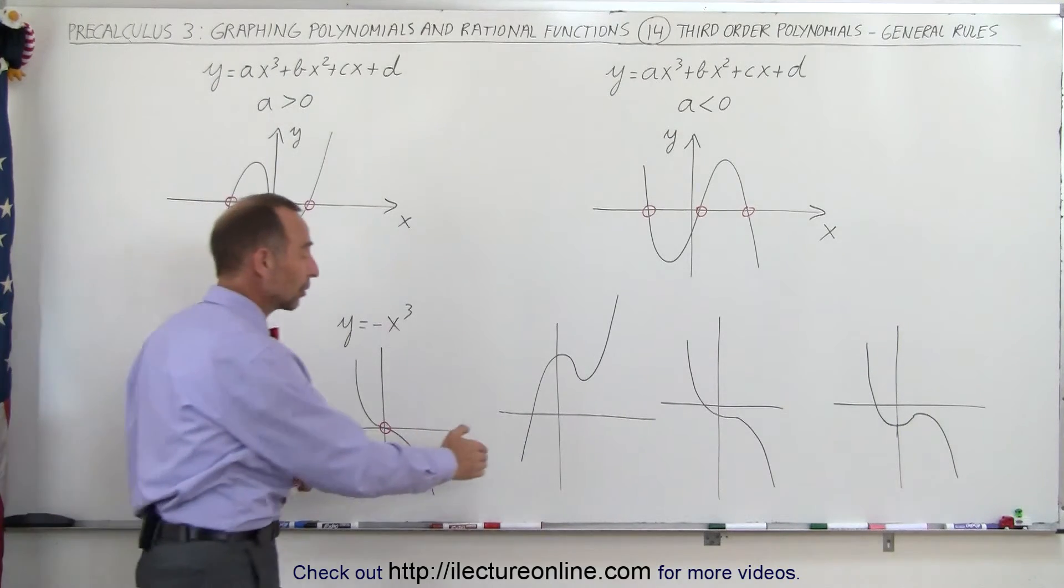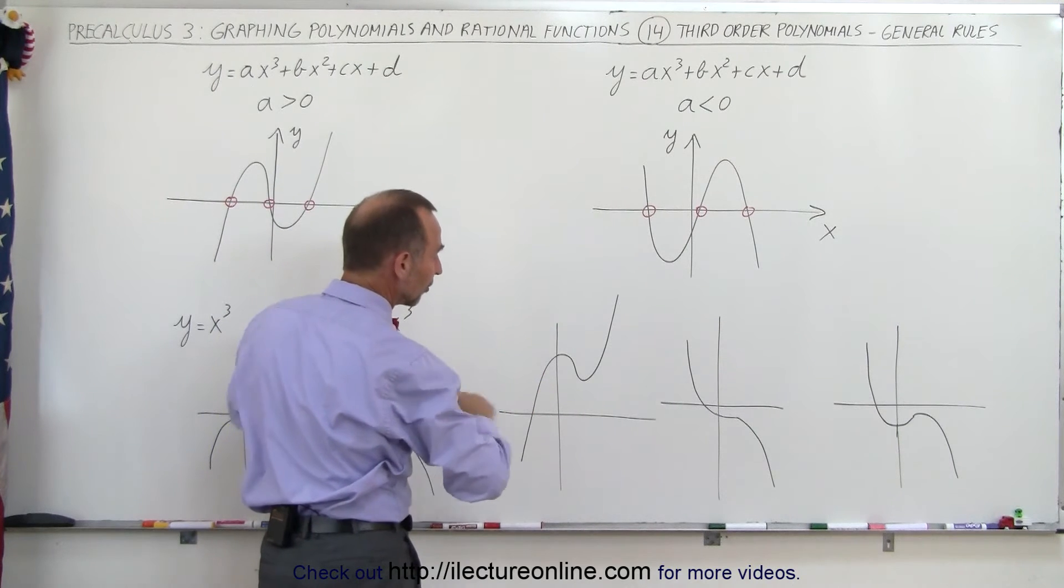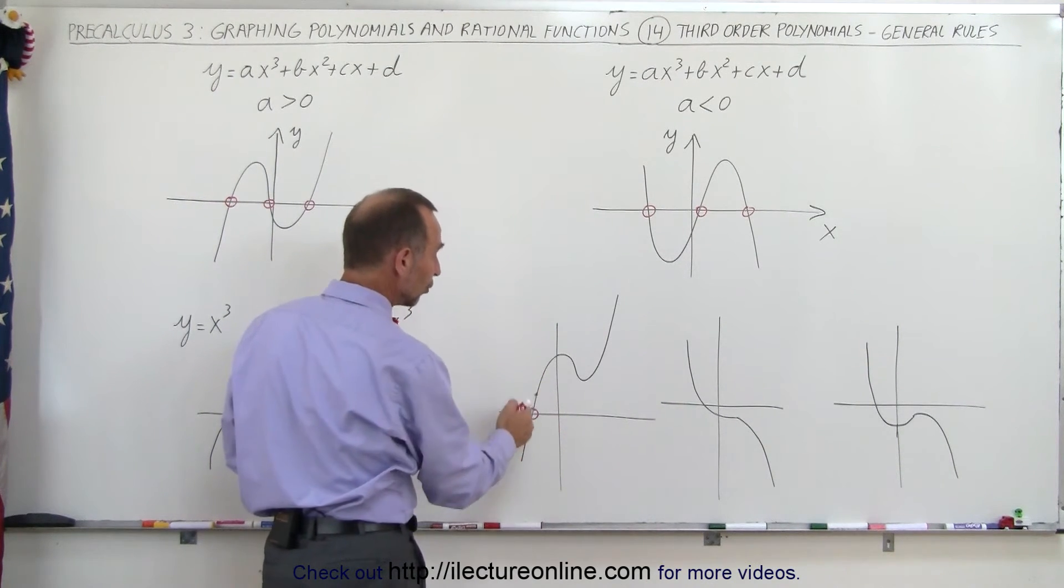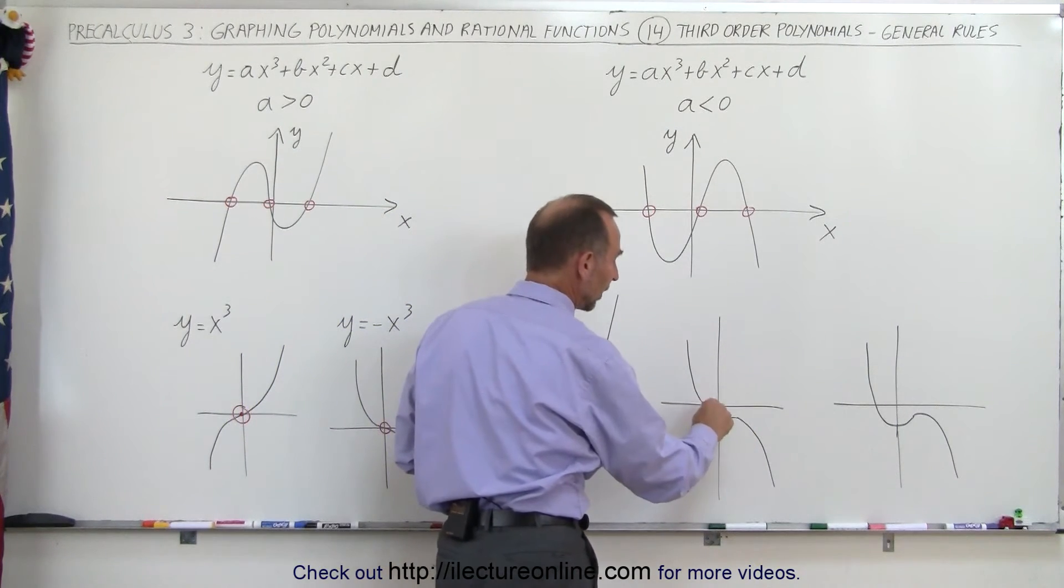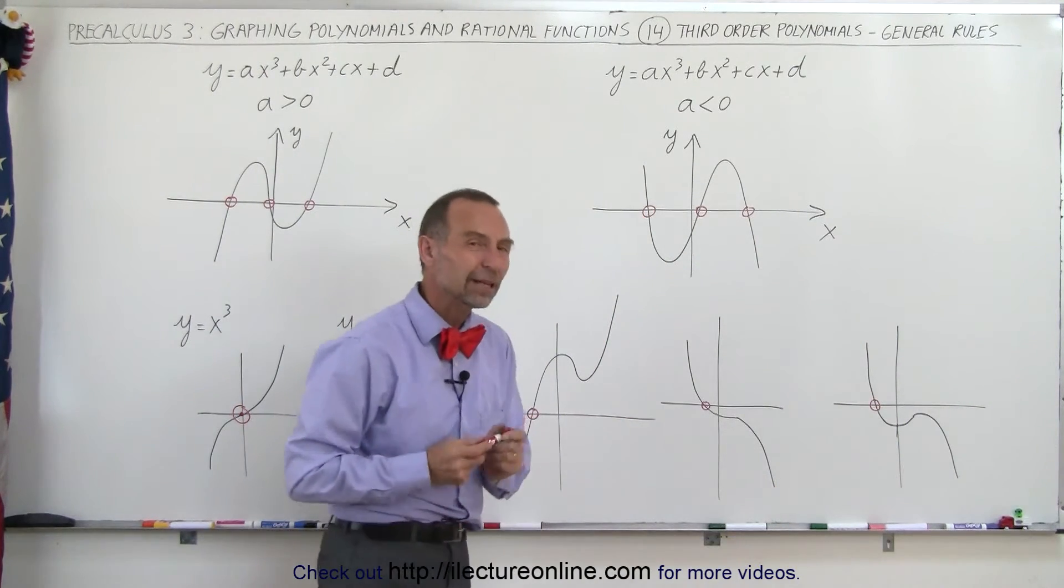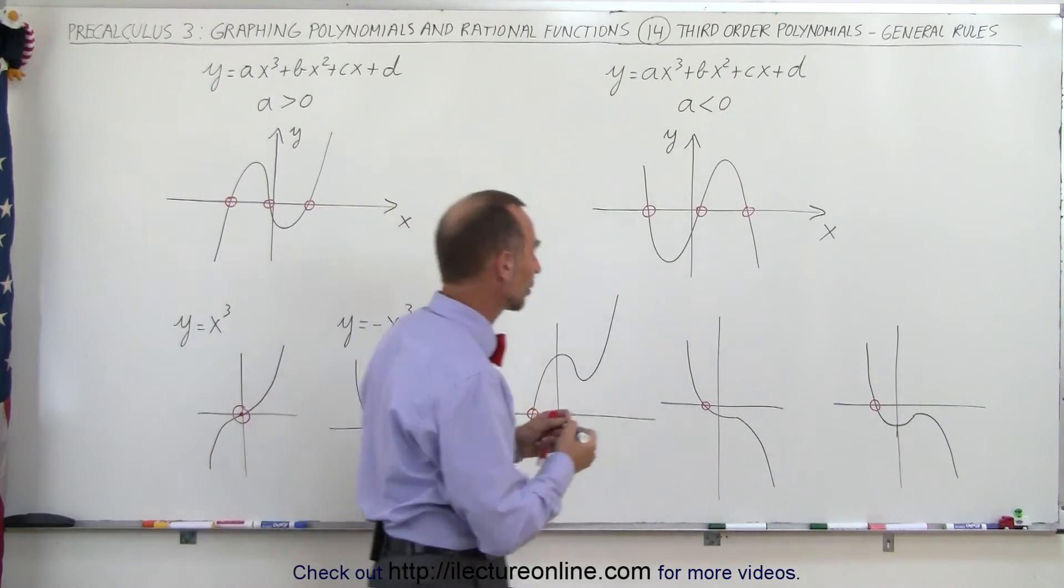Now there's other occasions where you can have a graph that looks like this, but notice it only crosses the x axis in one place, and therefore there's only one single root. Here you can see that it only crosses in one place with one root. There's a possibility for a second root, only two roots, and let me show you what that might look like.